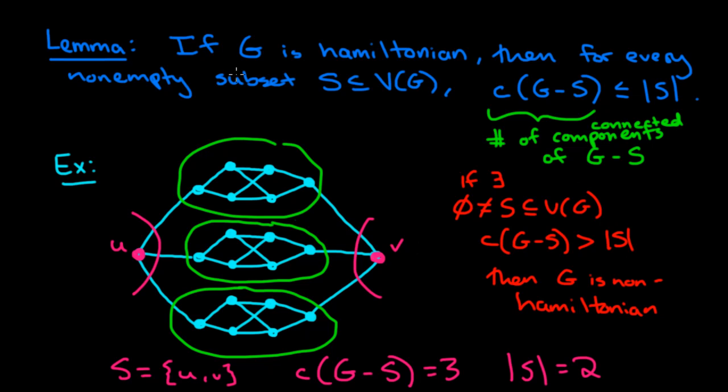So this condition up here is called a necessary condition, because if that graph is Hamiltonian, then the condition is necessary. If that condition is not satisfied, you can show it's non-Hamiltonian. But the condition is not sufficient for the existence of a Hamilton cycle. In other words, even if this condition is satisfied in the graph, it does not guarantee the existence of a Hamilton cycle. And so I want to show an example of that.